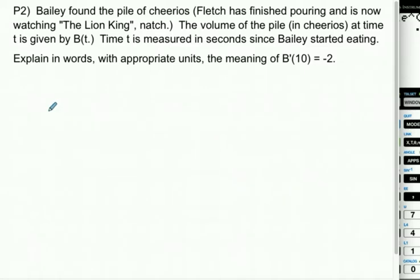Bailey found said pile of Cheerios, because Fletch has finished pouring them and is now watching The Lion King, naturally. The volume of the pile in Cheerios at time t is given by B(t). Now it's getting eaten, because Bailey has found the Cheerios and Bailey will eat the Cheerios. Time t is measured in seconds since Bailey started eating. Explain in words what B'(10) equals negative 2 means.